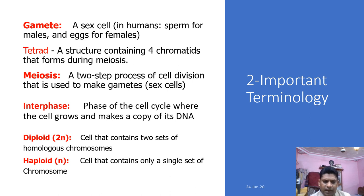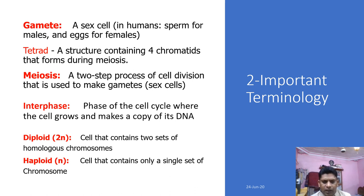Interphase, as we have already described in previous video lectures, is a phase of cell division in which cell growth and DNA replication take place. Diploid organisms are those that contain two sets of chromosomes, denoted as 2n, meaning chromosomes exist in pairs. Diploid organisms have two sets of all homologous chromosomes, while haploid organisms have only a single set of chromosomes.